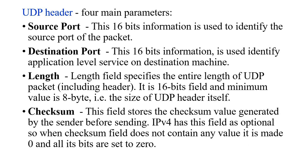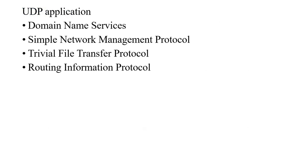When the checksum field does not contain any value, it is set to 0 — all its bits are set to 0. This is the procedure followed to identify errors in the data flow. On the application side, UDP is deployed with Domain Name Service (DNS), Simple Network Management Protocol (SNMP), Trivial File Transfer Protocol (TFTP), and Routing Information Protocol (RIP).